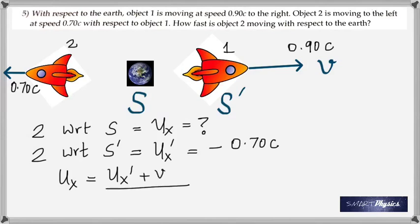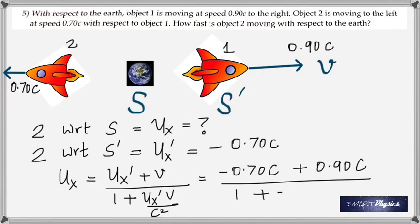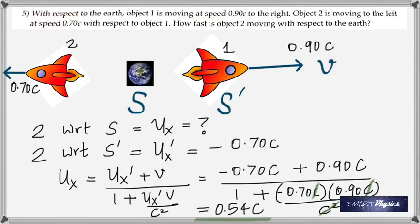That's why its velocity is taken as negative 0.70c. Once you get these, it's just a matter of plugging into the equation. And you're looking for ux, and ux is ux prime plus v divided by 1 plus the product of the 2 divided by c squared. The c's on top and the c squared will get cancelled and you get the answer 0.54c.